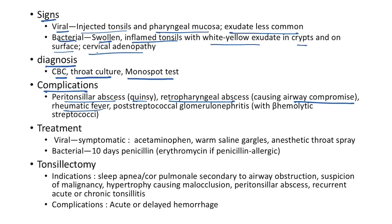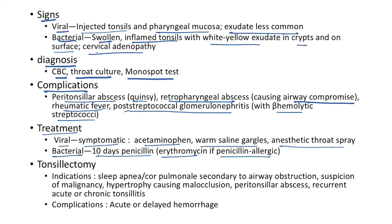Treatment of pharyngotonsillitis: viral causes — symptomatic treatment with acetaminophen, warm saline gargles, and anesthetic throat spray. For bacterial causes, give a 10-day course of penicillin; use erythromycin if the patient is penicillin allergic. Indications for tonsillectomy include sleep apnea or cor pulmonale secondary to airway obstruction, suspicion of malignancy, hypertrophy causing malocclusion, peritonsillar abscess, and recurrent acute or chronic tonsillitis.